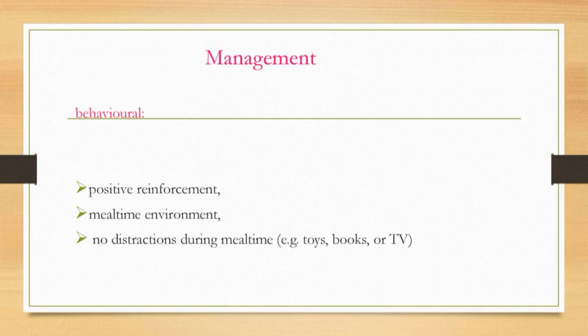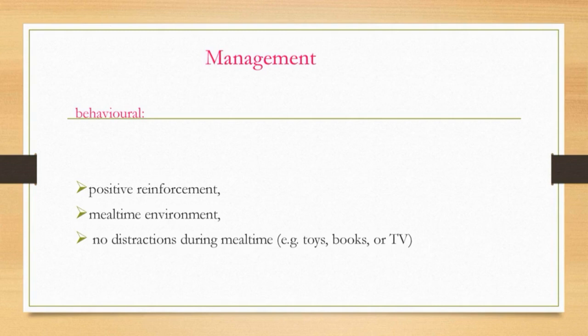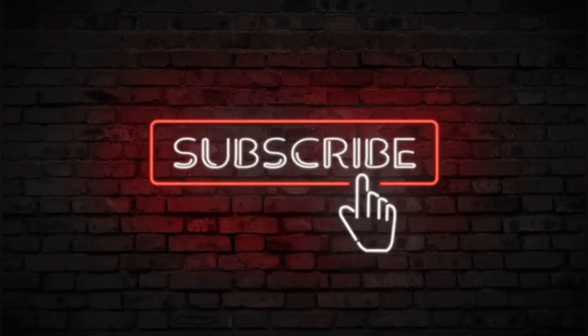Nutritional management includes educating about age-appropriate food, calorie boosting, and mealtime scheduling. Behavioral management includes positive reinforcement, optimizing the mealtime environment, and no distractions during mealtime — for example, no toys, books, or TV — and addressing maladaptive adolescent behaviors.